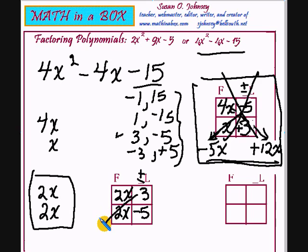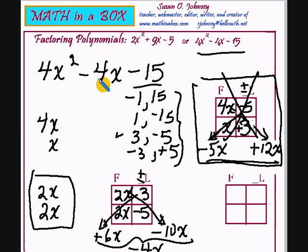Let's go across. That will give us a positive 6x. If I go across this way, I get a negative 10x. A plus 6x and a minus 10x is, yes, it is right, negative 4x. Our middle term is a negative 4x, so this is the correct box.